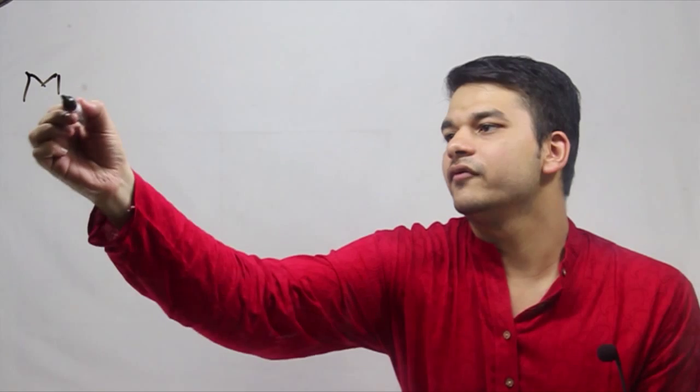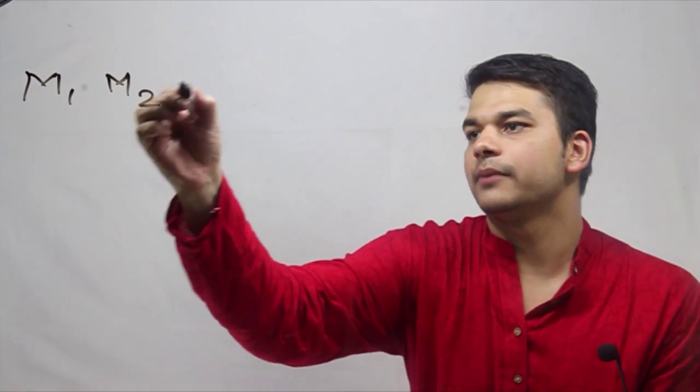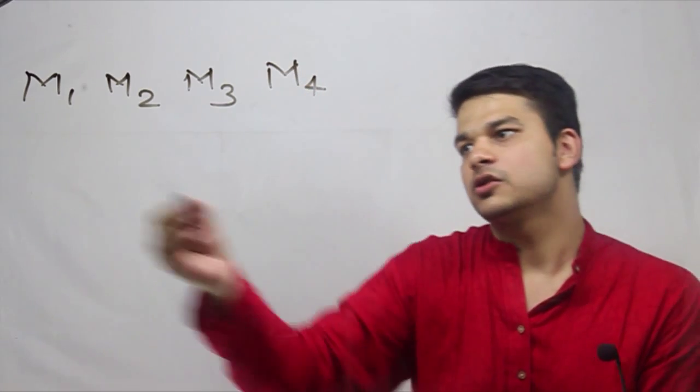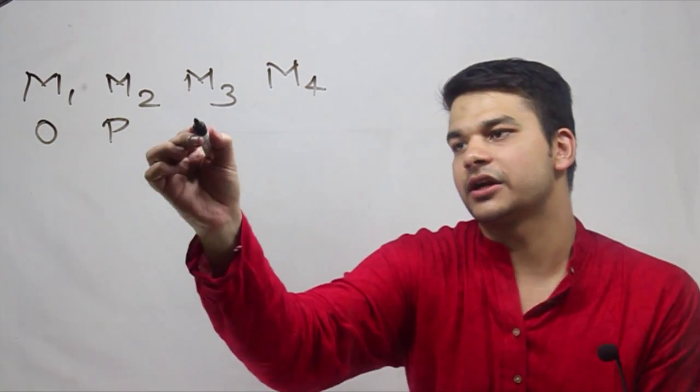In this problem, there are eight people from A to H who travel on four motorcycles, M1, M2, M3, and M4, and they carry four baskets, O, P, Q, and R respectively.